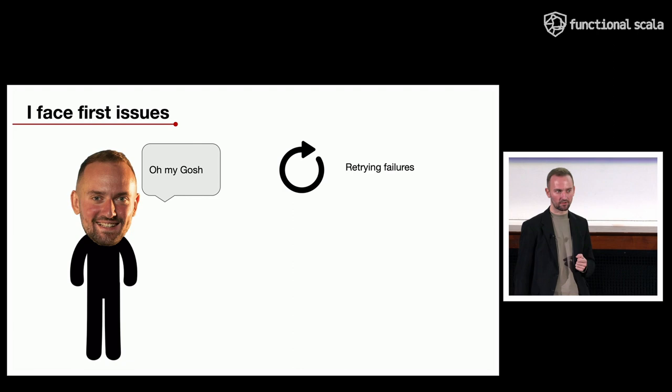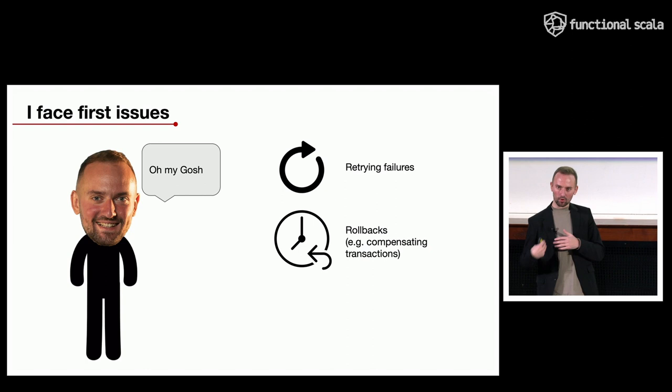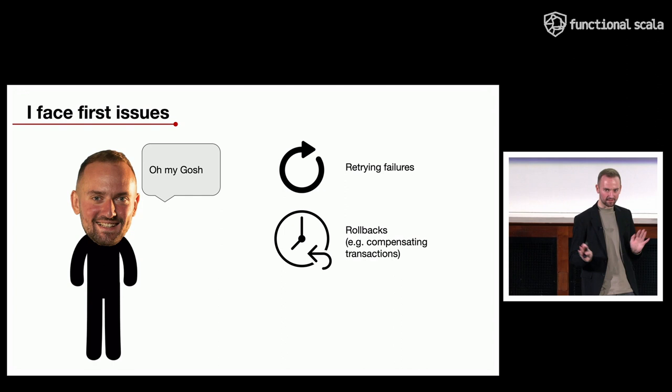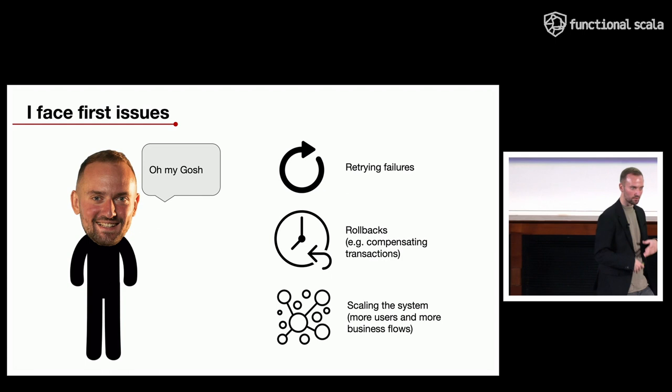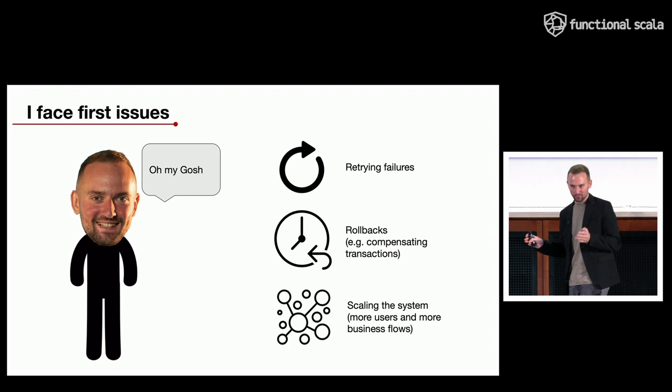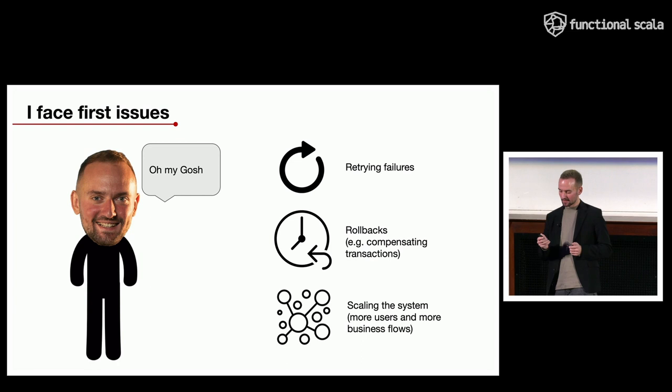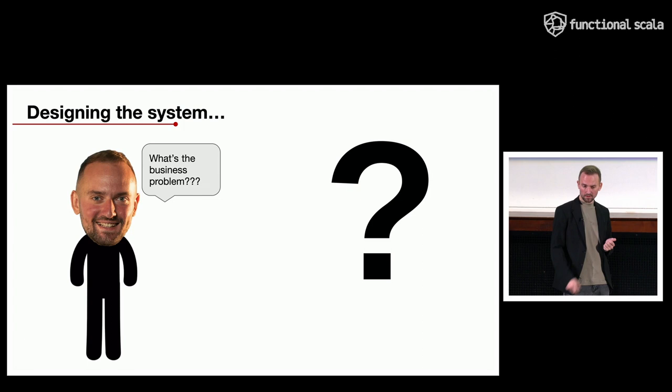I need to handle failures in case something goes wrong within this complicated process. For instance, when Bob accepts the exchange order but disappears and doesn't confirm that he sent the money, we need to roll back the process and give Alice her money back. I also need the system to be scalable enough to support more users and more business flows as the platform expands to other countries.